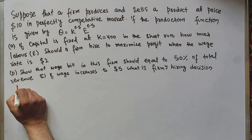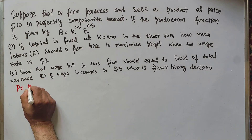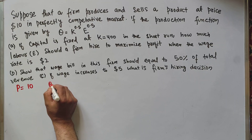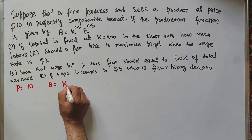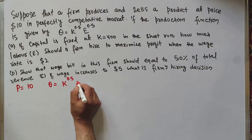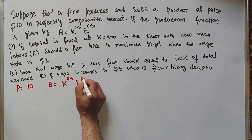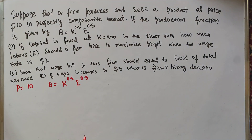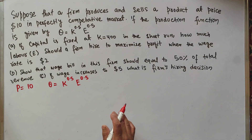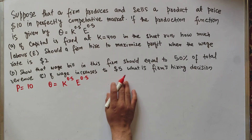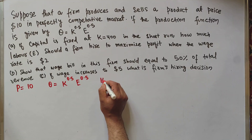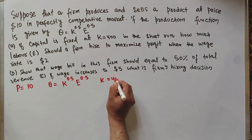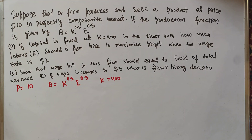We have been given the price of the product as $10. The production function is K^0.5 × E^0.5. This is the standard Cobb-Douglas production function. In the first part, capital is fixed at 400, and we need to find out what will happen in the short run.